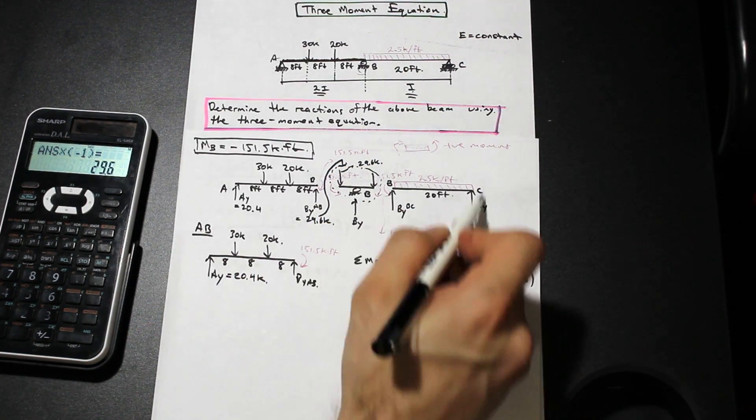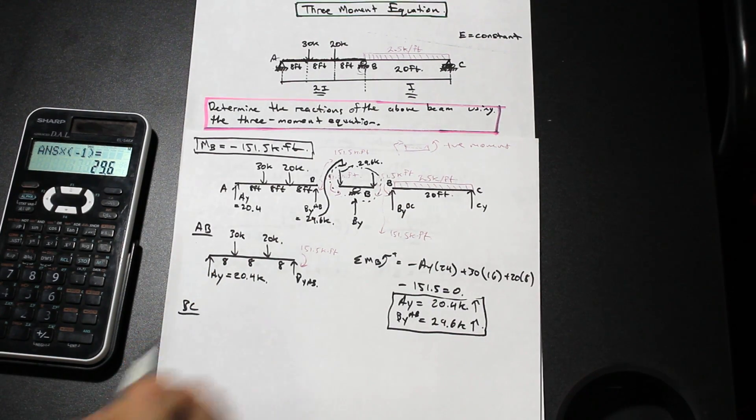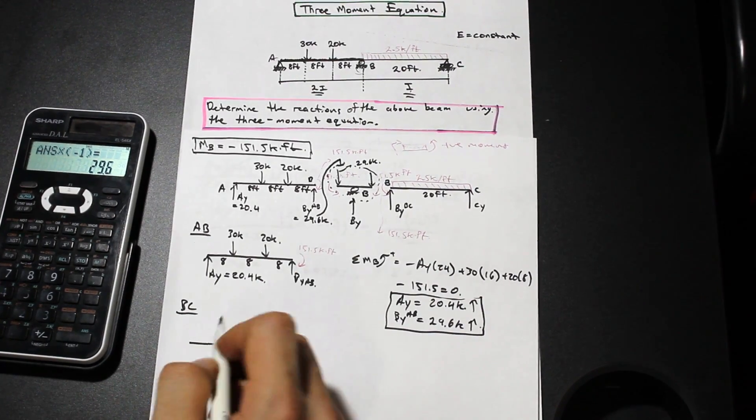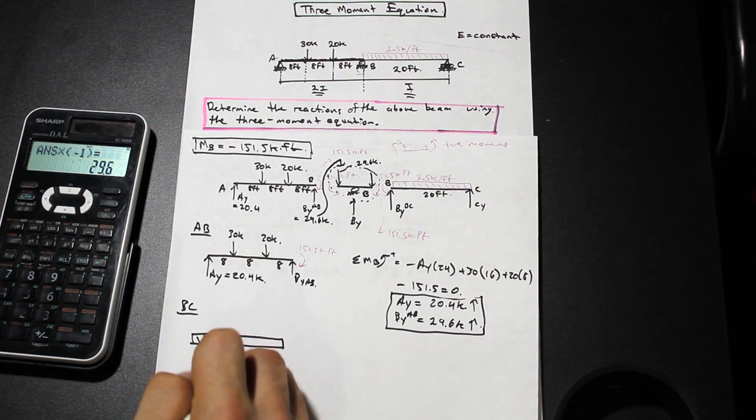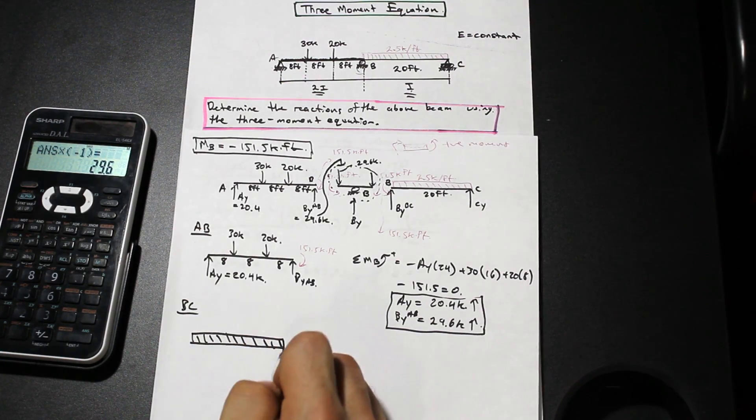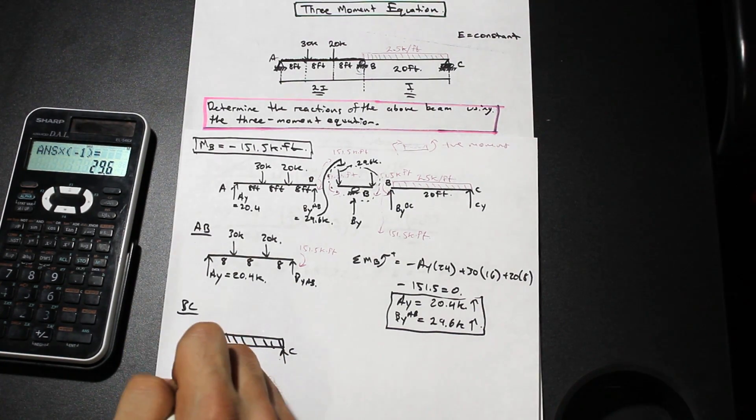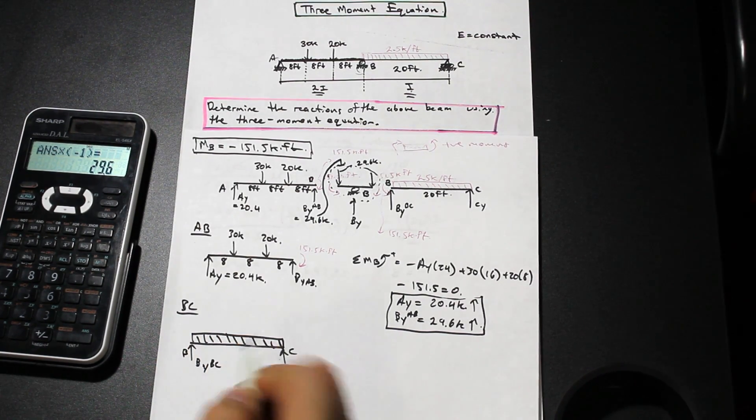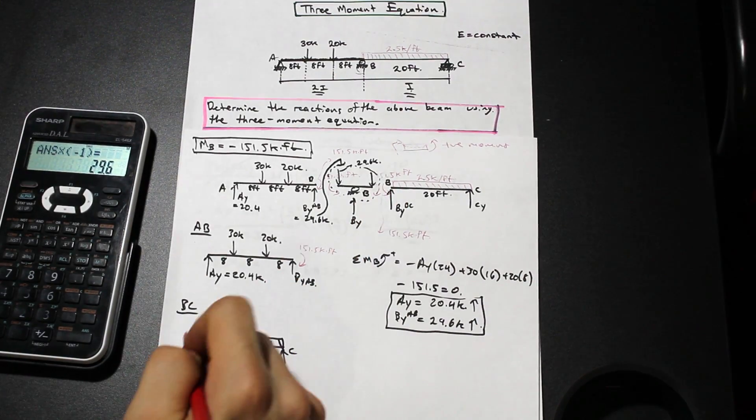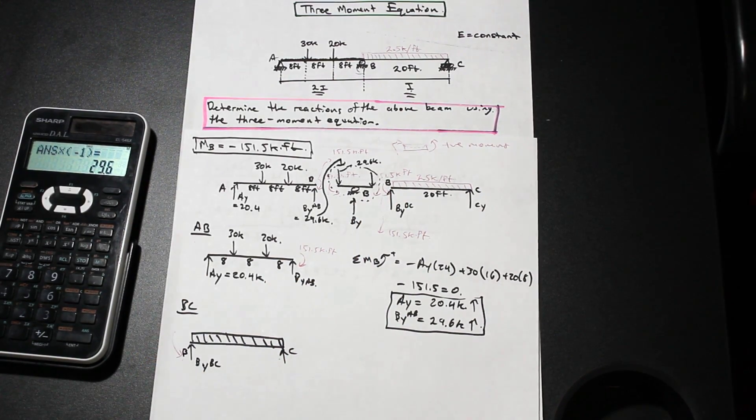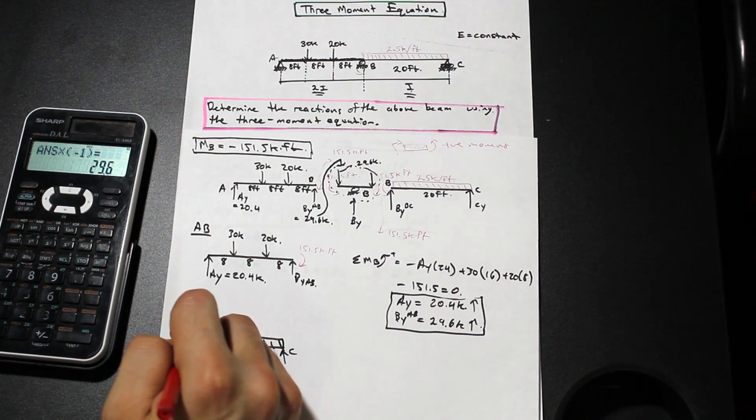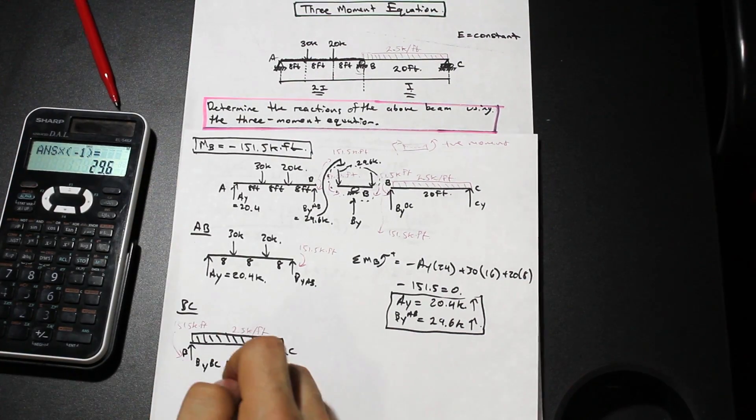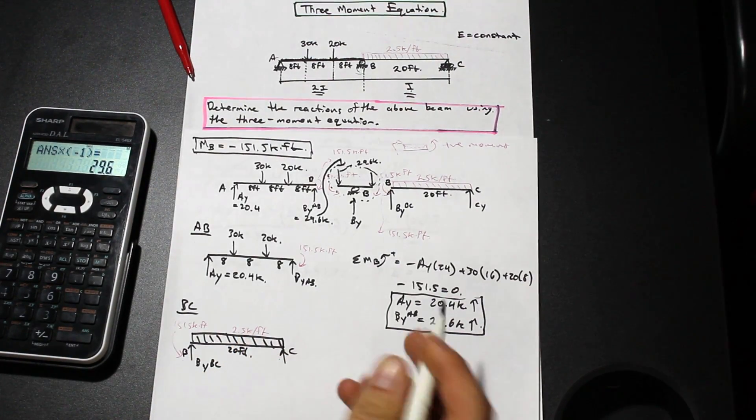Let's take a look at the right section here BC. I'll just rewrite it so it's a little cleaner. We have our distributed load, we have C, we have B, we have BY where we cut the beam, we'll call that BYBC, and we have that moment over here that we transferred which is in this direction and that is going to be 151.5 kip feet. We have 2.5 kip per feet here and we have a distance of 20 feet.